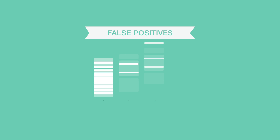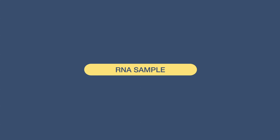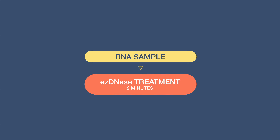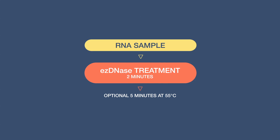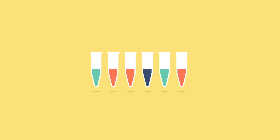Reason number four is false positives in RT-qPCR, which are caused by genomic DNA contamination that leads to overestimation of the amount of RNA yield. To overcome this, use DNase treatment to remove contaminating double-stranded DNA from your sample. You can add the DNase prior to the reverse transcription step without risking damage to or loss of your RNA.